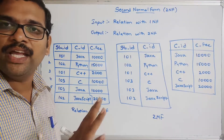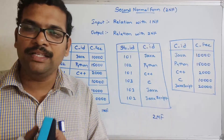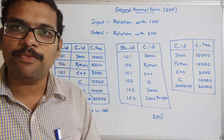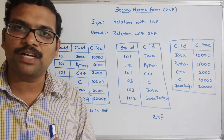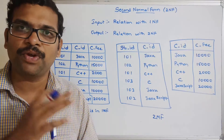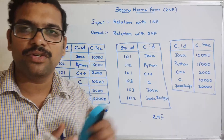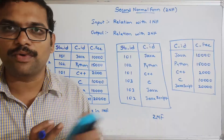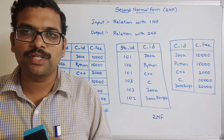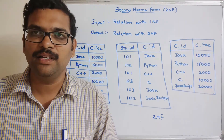I recommend viewing the links for functional dependency concepts in the description — covering what functional dependency is, full functional dependency, partial functional dependency, and types of functional dependency. Understanding these makes it much easier to understand normalizations like 1NF, 2NF, 3NF, and beyond. Hope you understood this topic. Post any doubts in the comment section. If you enjoyed this session, like, share, and subscribe to our channel. Thanks for watching.